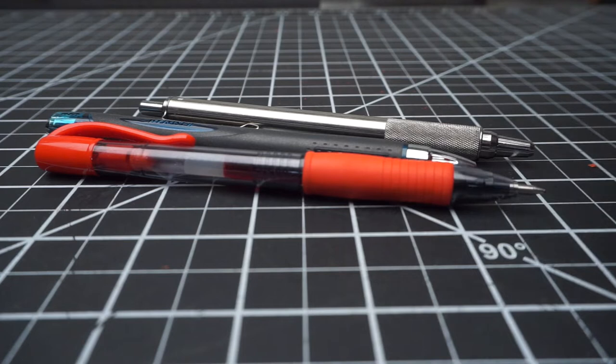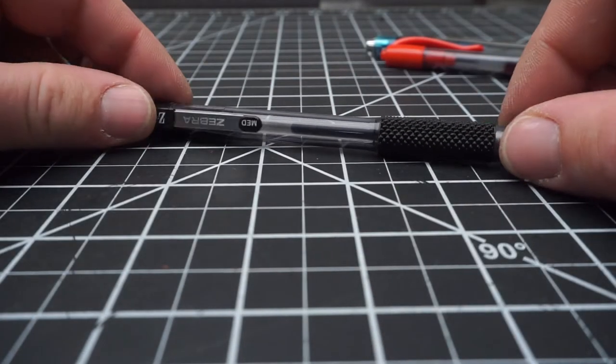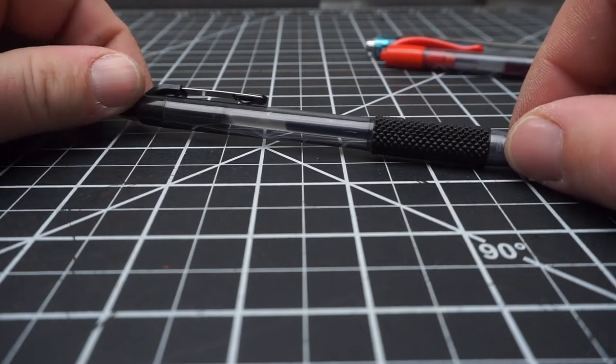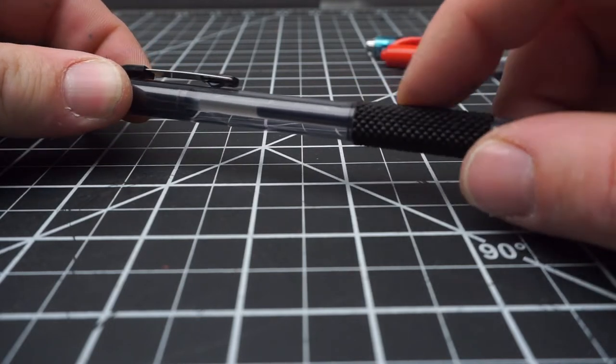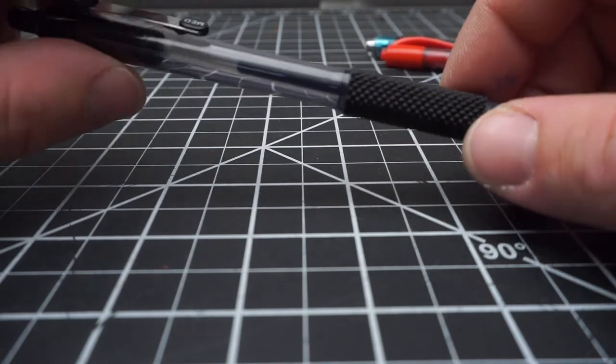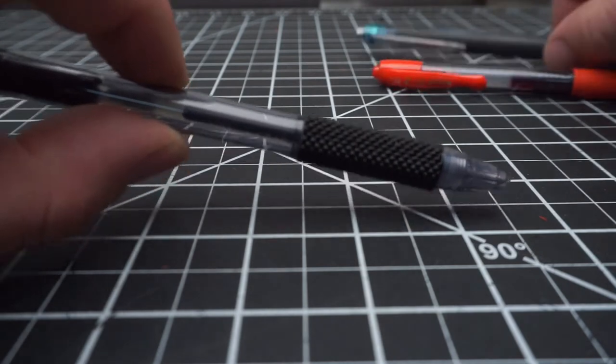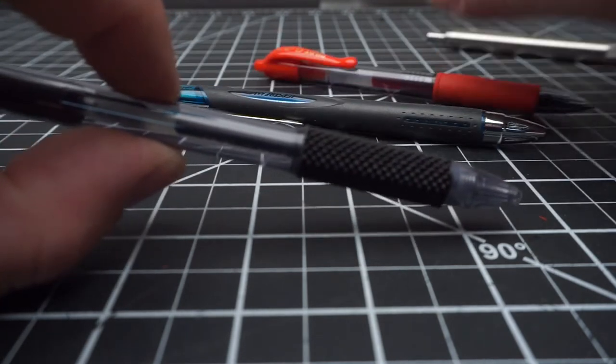It's called the Zebra Z-Grip. These things are about, I don't know, 30 to 50 cents a piece. Usually has a disgusting rubber part on here. They come in a decent ballpoint, but if you cut down the end just a hair, you can fit a Jetstream refill or a gel refill in this guy.